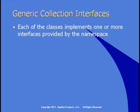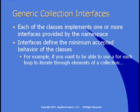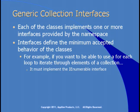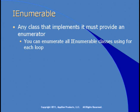Each of these classes implements one or more interfaces provided by this namespace. These interfaces define the minimum accepted behavior of the classes. For example, if you want to use a for-each loop to iterate through the elements of a collection, that collection has to implement the IEnumerable interface. The IEnumerable interface requires that any class implementing it provide an enumerator.